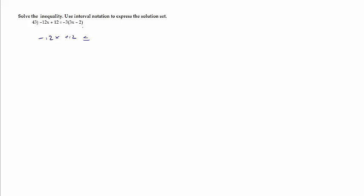For number 43, we're supposed to solve the inequality and write our final answer using interval notation. Anytime I give you an inequality, I'm going to ask you to write your answer with interval notation. Most of the steps are the same for a linear equation; we just have two little differences. So let's go ahead and start solving. I notice I want to simplify each side first and combine my like terms. So I get negative 12x plus 12 is less than or equal to, distributing the negative 3, I get negative 9x plus 6.